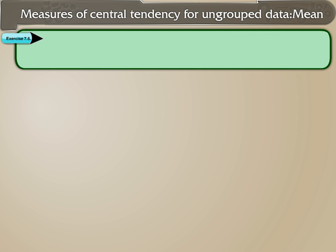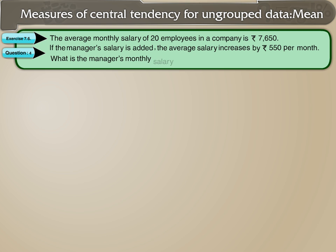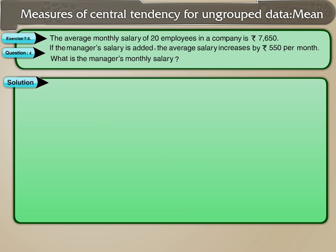Let's solve question 4 from exercise 7.6. If the manager's salary is added, the average salary increases by Rs. 550 per month. What is the manager's monthly salary? It is given that the average monthly salary of 20 employees is Rs. 7,650.